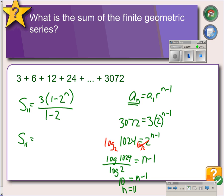So s sub 11 equals 3 times 1 minus 2 to the 11th divided by 1 minus 2. When you're doing your calculations, exponents would come before subtraction, so we have to do 2 to the 11th first. So we have 3 times 1 minus 2 to the 11th is 2,048.